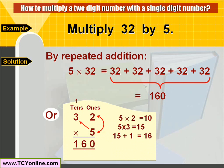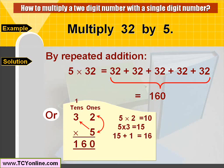First, place the numbers in a place value chart and multiply 5 with the digit at the ones place, that is 2. We get 10. Carry 1 to the top of 3 and place 0 below the ones column. Now multiply 5 with 3 at the tens place — we get 15. Add the carried 1 to get 16. So our final answer is 160.